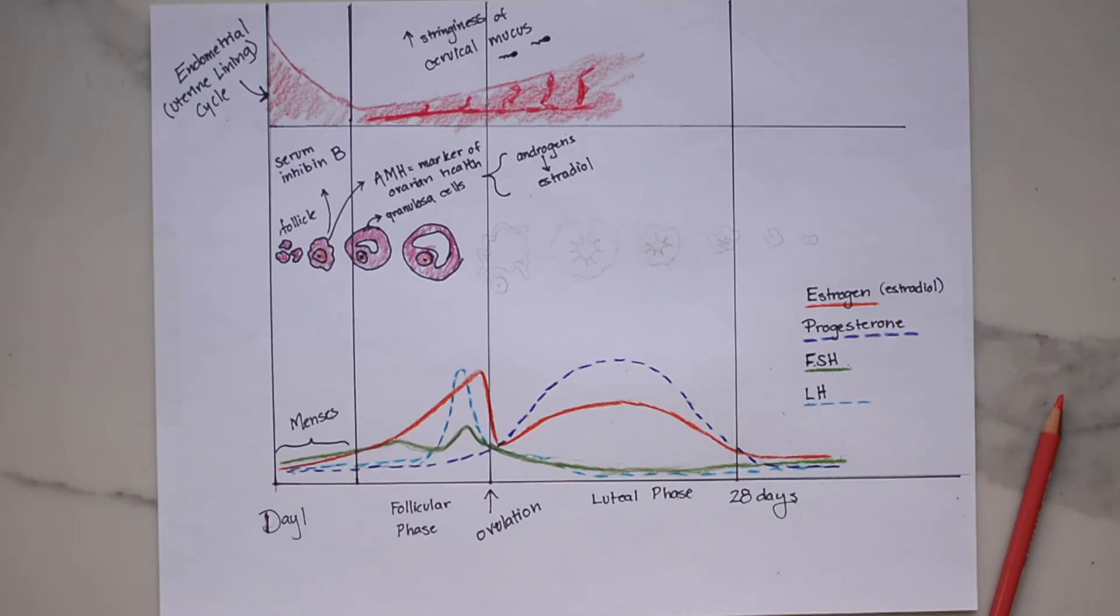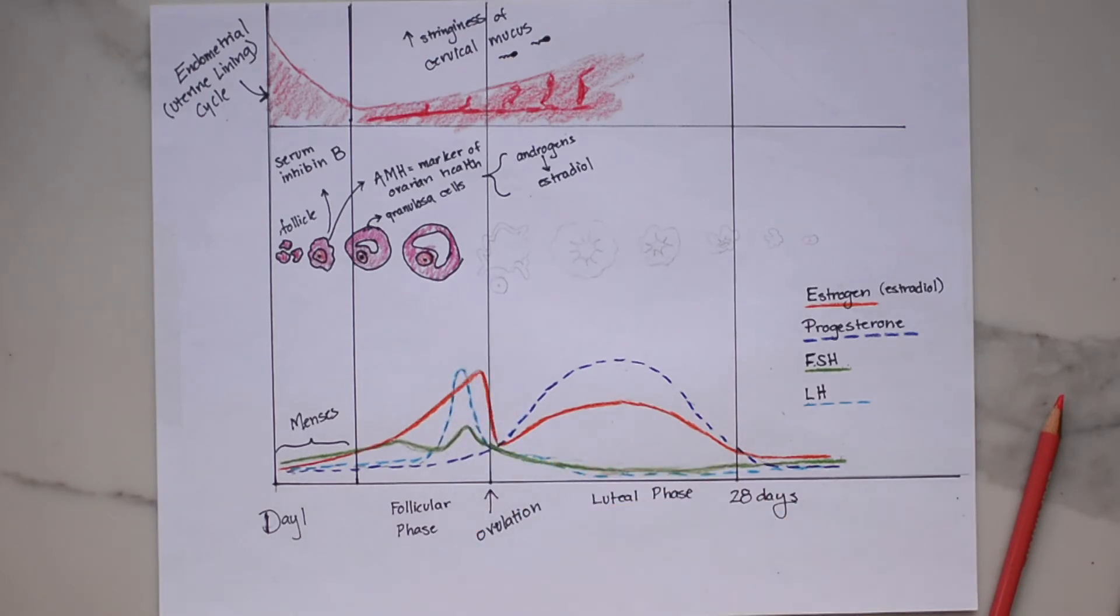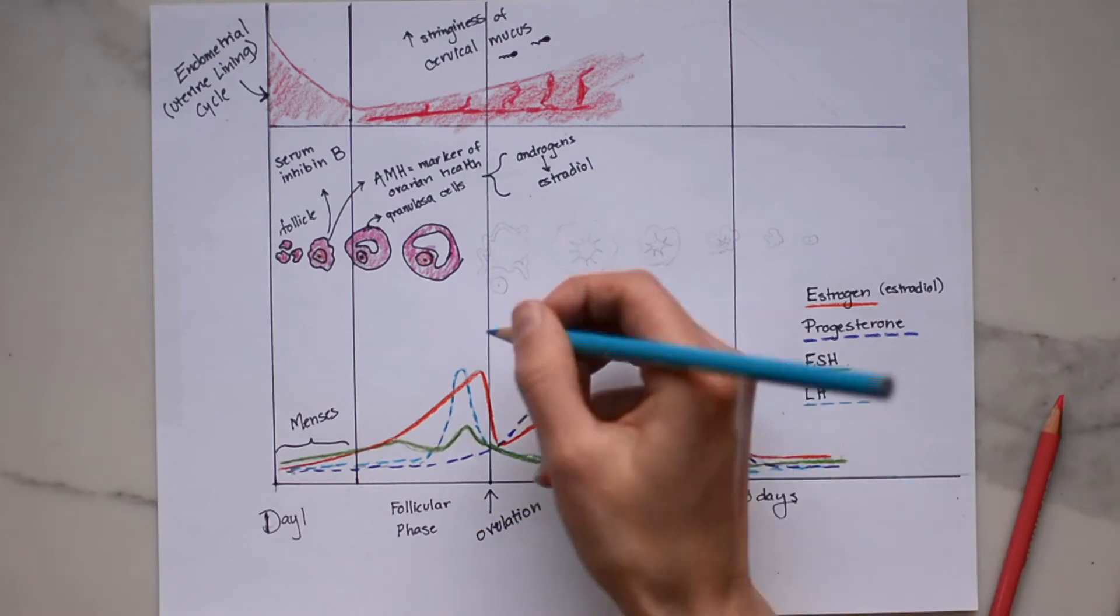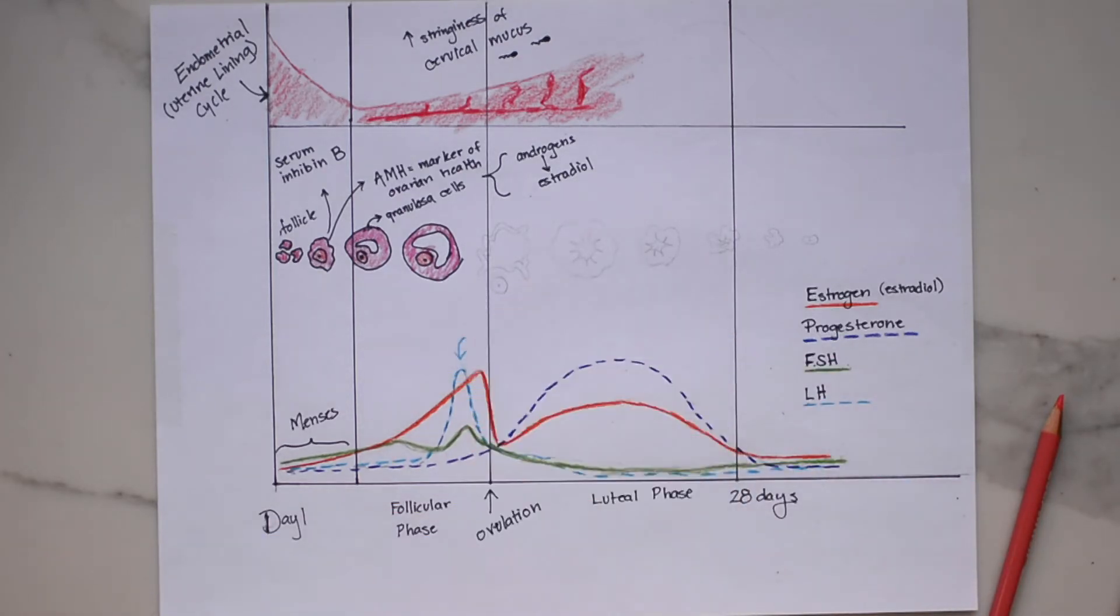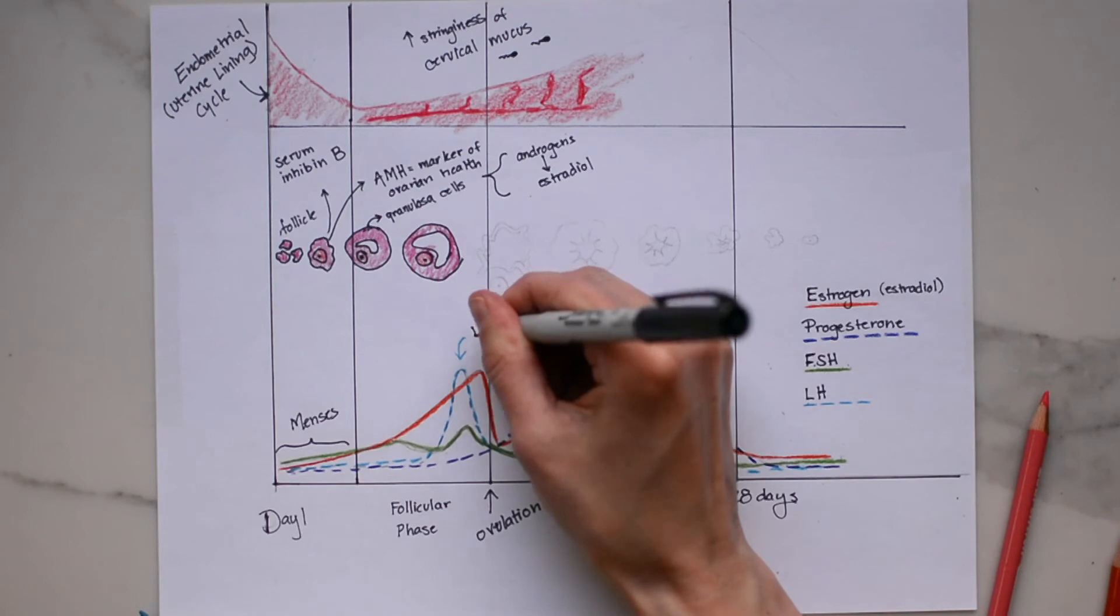So estrogen levels continue to rise until approximately one day before ovulation and at this point in the mid cycle surge we see a tenfold increase in luteinizing hormone concentrations and a smaller rise in FSH. Now this LH surge initiates a substantial change in the ovary. The immature egg or oocyte is released approximately 36 hours after that LH surge.